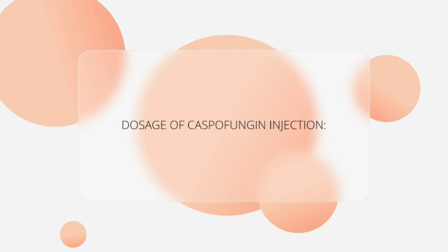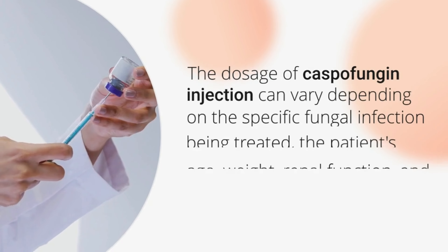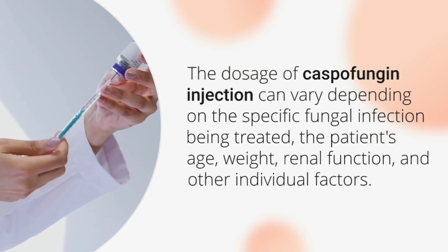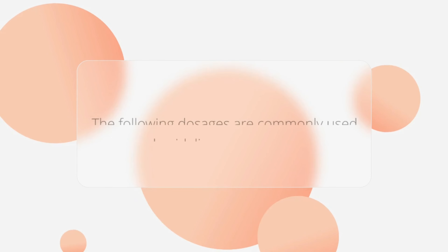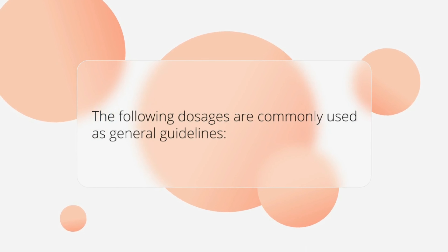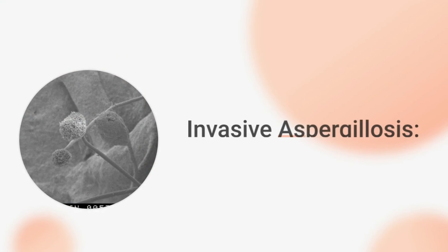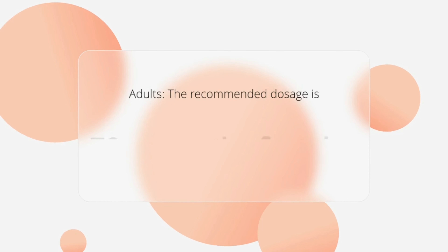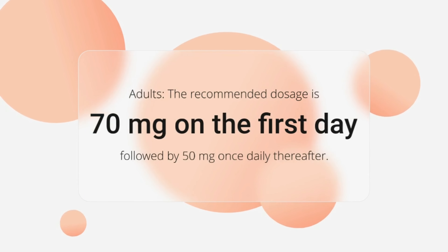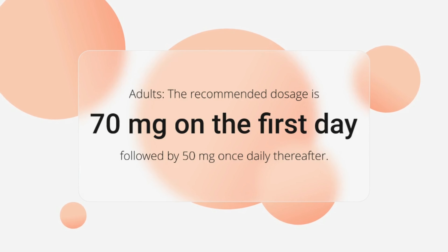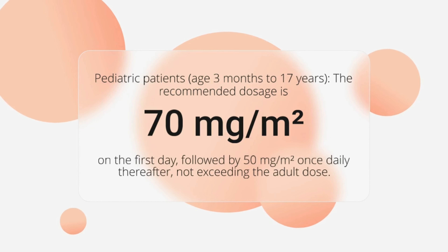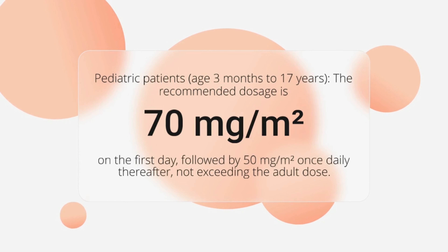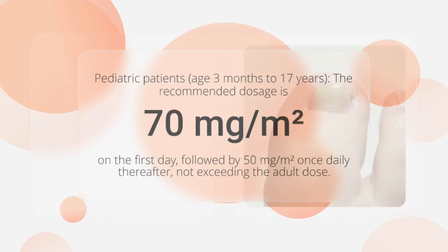Dosage of caspofungin injection. The dosage of caspofungin injection can vary depending on the specific fungal infection being treated, the patient's age, weight, renal function, and other individual factors. The following dosages are commonly used as general guidelines. In invasive aspergillosis, the recommended dosage for adults is 70 mg on the first day, followed by 50 mg once daily thereafter. The recommended dosage for pediatric patients is 70 mg per square meter on the first day, followed by 50 mg per square meter once daily thereafter, not exceeding the adult dose.